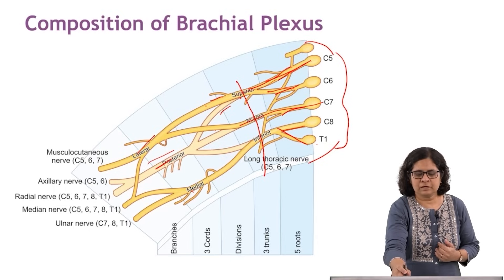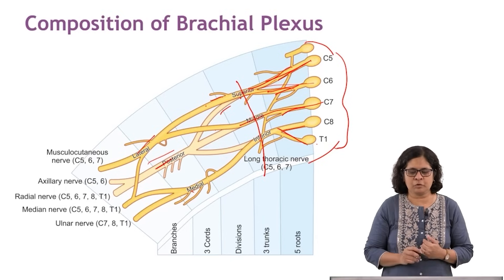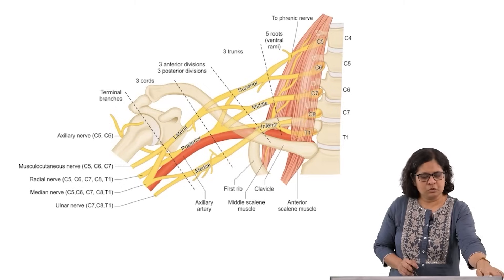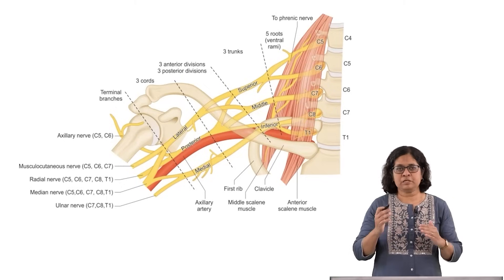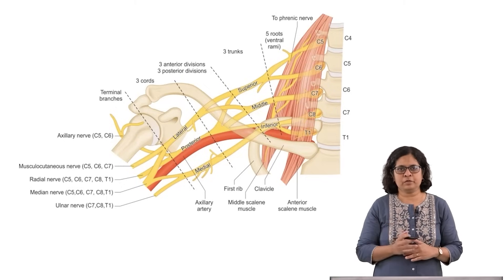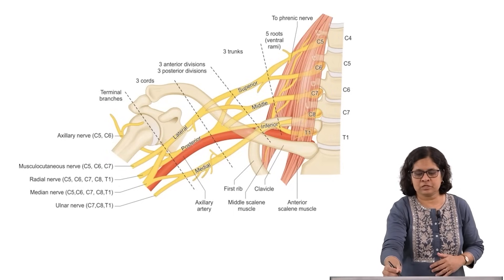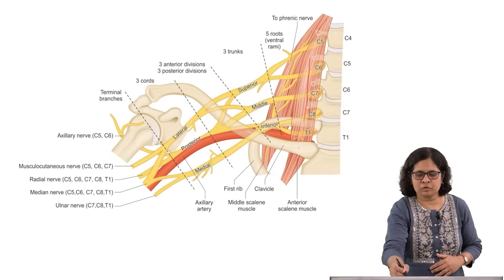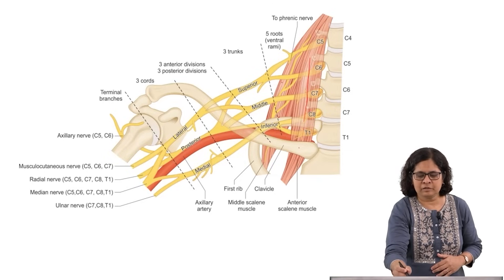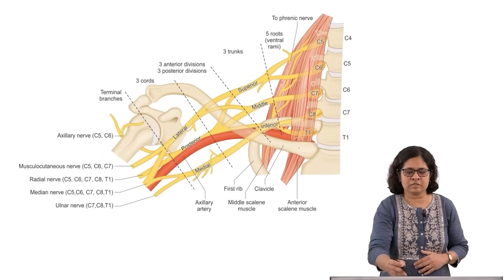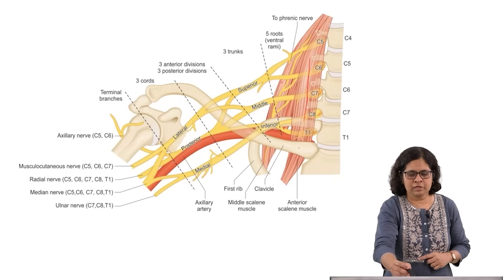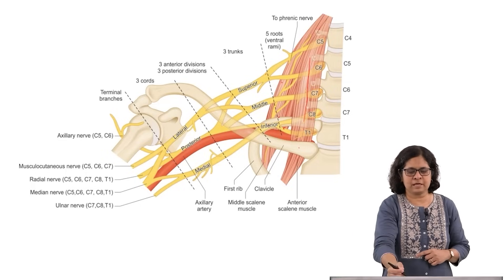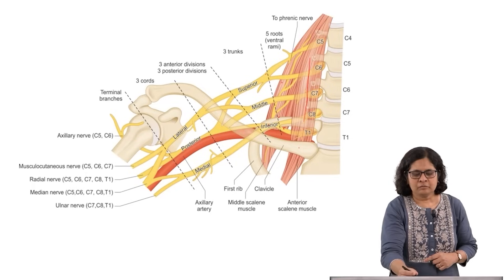This same picture is superimposed on surrounding anatomical structures. The roots come in between the anterior and middle scalene muscles — these are the ventral rami forming five roots. The trunks are formed after the roots leave the middle scalene muscle, and that is where you give the interscalene block.